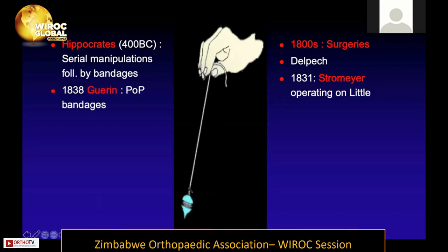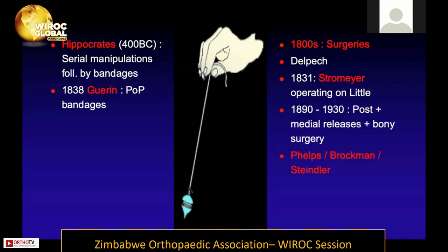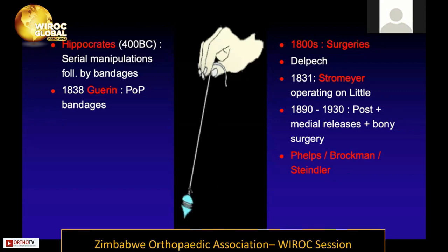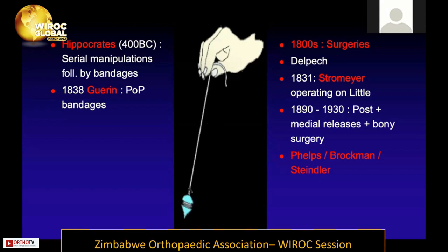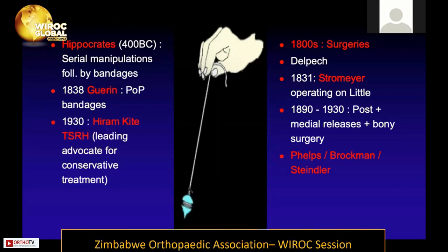In the early 19th century, when plaster of Paris became commonly used for fractures, Guerrier described using it to correct clubfoot. Then again in the latter 19th and early 20th century, surgeries became popular once more, with advocates like Phelps, Brockman, and Steindler describing various posterior and medial releases and even bony surgeries to correct clubfoot.